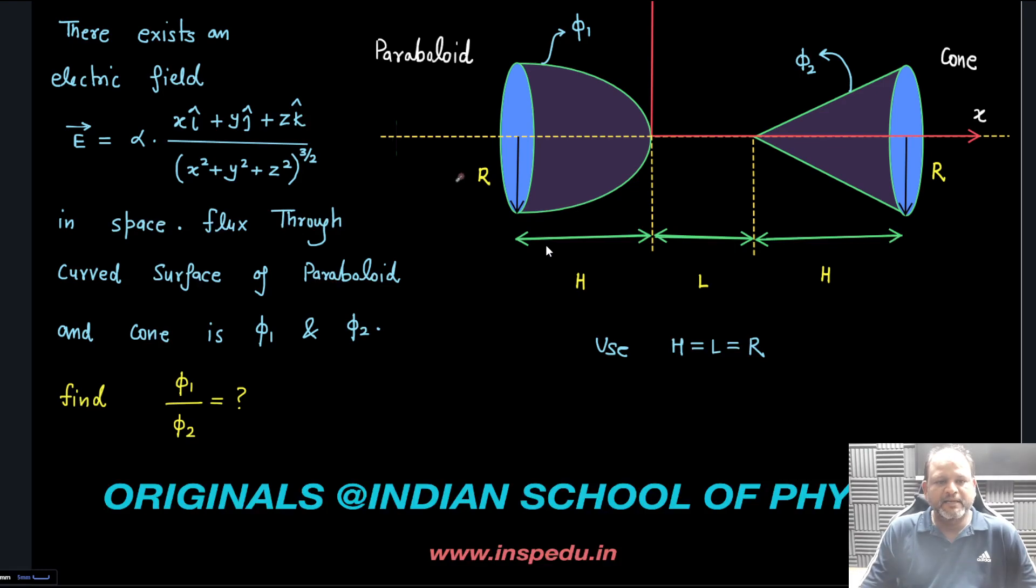It is given that flux through curved surface of paraboloid and cone is φ₁ and φ₂. There exists a paraboloid with vertex at origin, and at some distance L there is a cone. They are asking about flux through this curved surface.